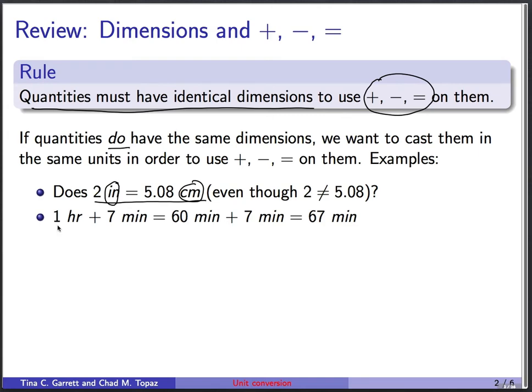Another very simple example: we can write 1 hour plus 7 minutes. This is dimensionally legal because these are both measures of time. They have the dimensions of time. Now if you want to simplify that expression, it helps to cast them in the same set of units. So we can take 1 hour and write it in terms of minutes, and then we have 60 minutes plus 7 minutes is 67 minutes. And that's really what we're going to be talking about today, is unit conversion.